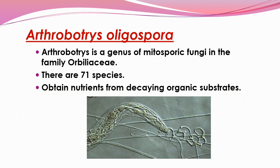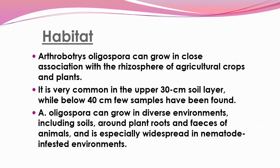There are 71 species that obtain nutrients from decaying organic substrates or dead decaying organisms. They can grow in close association with the rhizosphere of agricultural crops and plants. They are very common in the upper 30 centimeter soil layer, while below 40 centimeters few samples have been found. They can grow in diverse environments including soil around plant roots, pieces of animals, and especially widely distributed in nematodes.